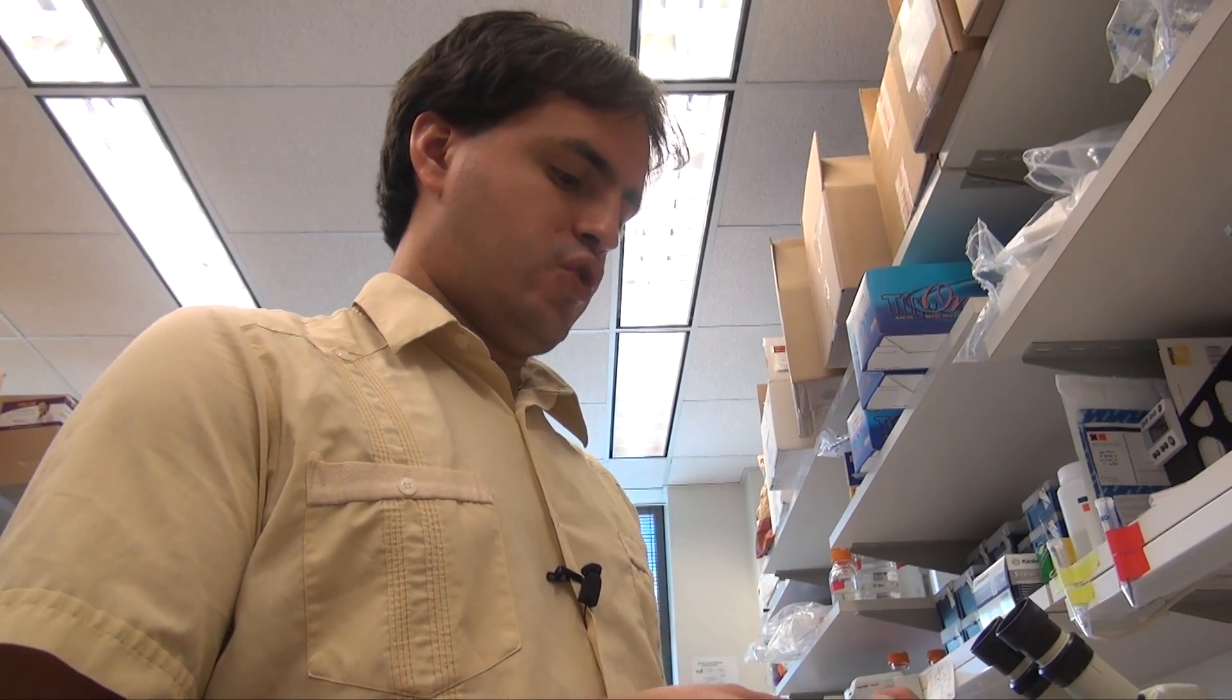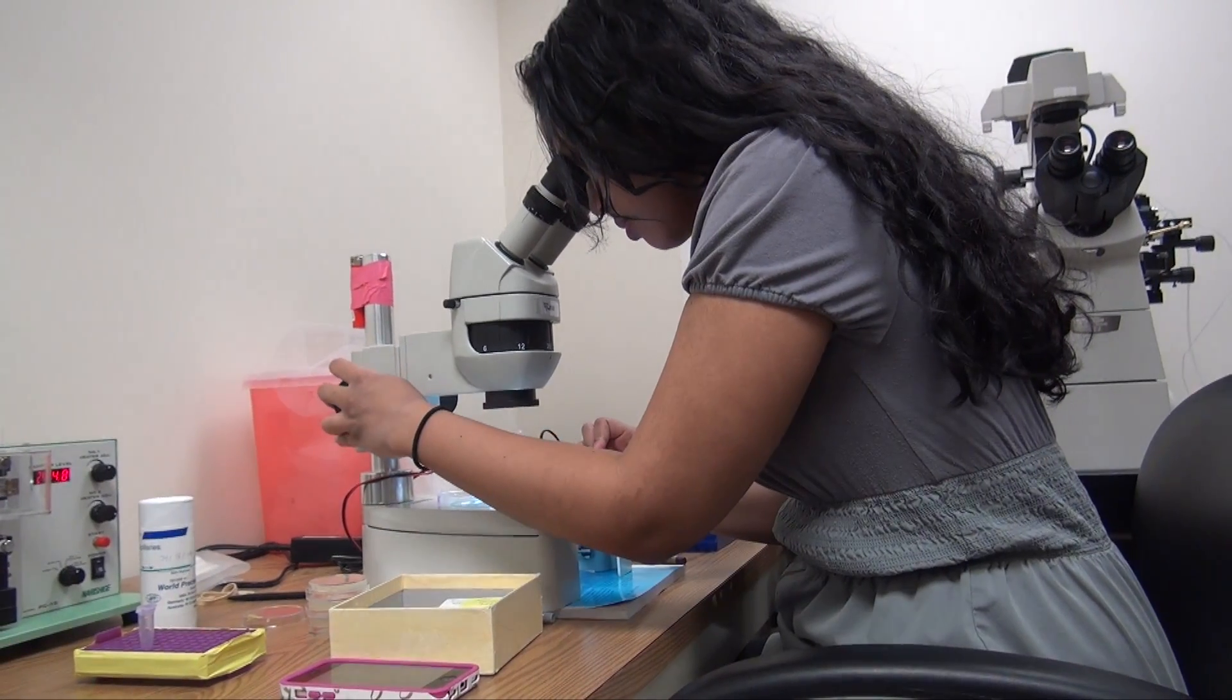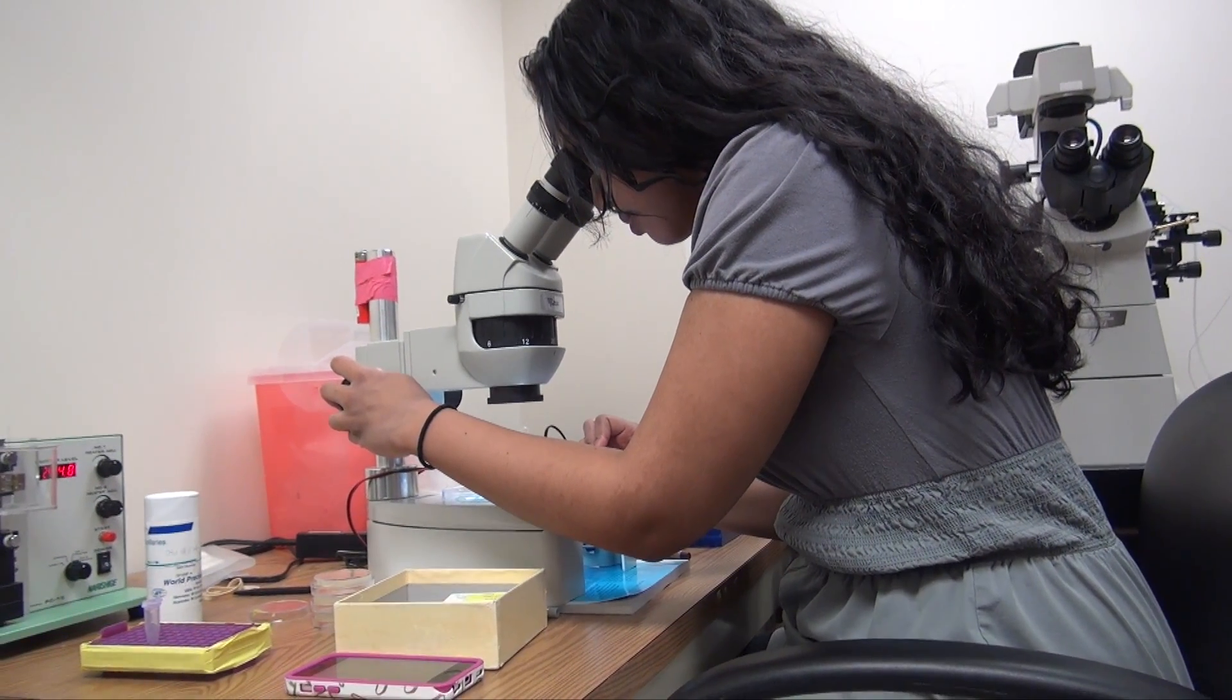Now the nematodes are tiny. They're about a millimeter in length. That is about the size of a comma in a sentence. So we cannot see them very well with our eyes. We use these microscopes to magnify them and to be able to see them.